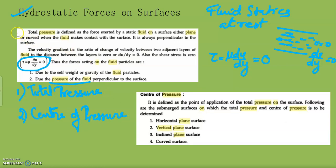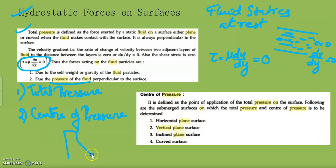Total pressure is defined as the force exerted by a static fluid on a surface — either a plane or curved surface — when the fluid makes contact with it. For example, consider a dam or a barrage where water is stored still. The water will always act on the dam in a still or at-rest position.